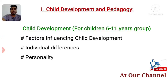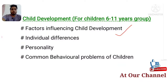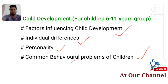First, we will talk about Child Development for children of 6 to 11 years. We will discuss factors influencing Child Development, Individual Differences, Personality of Child, Common Behavioral Problems, and Adjustment.